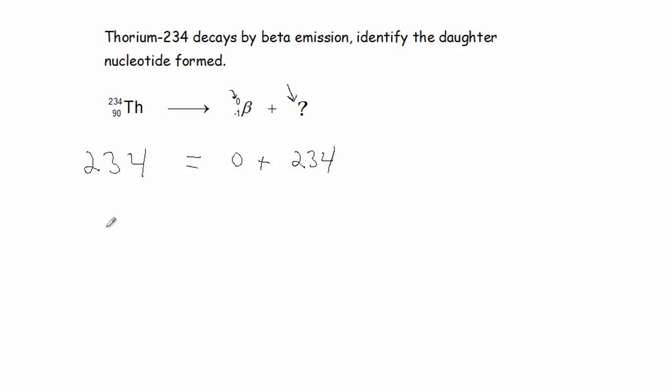The subscripts on the left side is 90. And that must equal 90 on the right side. On the right side of the subscripts, we have negative 1. And negative 1 plus what will give me 90? Well, that's going to be 91.